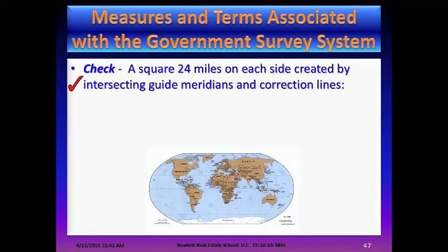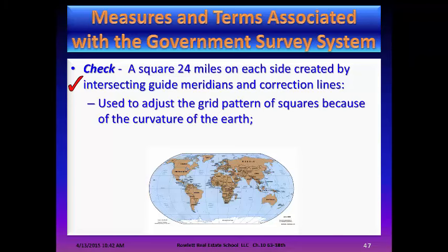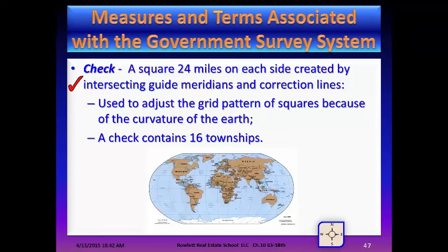A check is a square 24 miles on each side, created by intersecting guide meridians and correction lines, used to adjust the grid pattern of squares because of the curvature of the earth. A check contains 16 different townships.